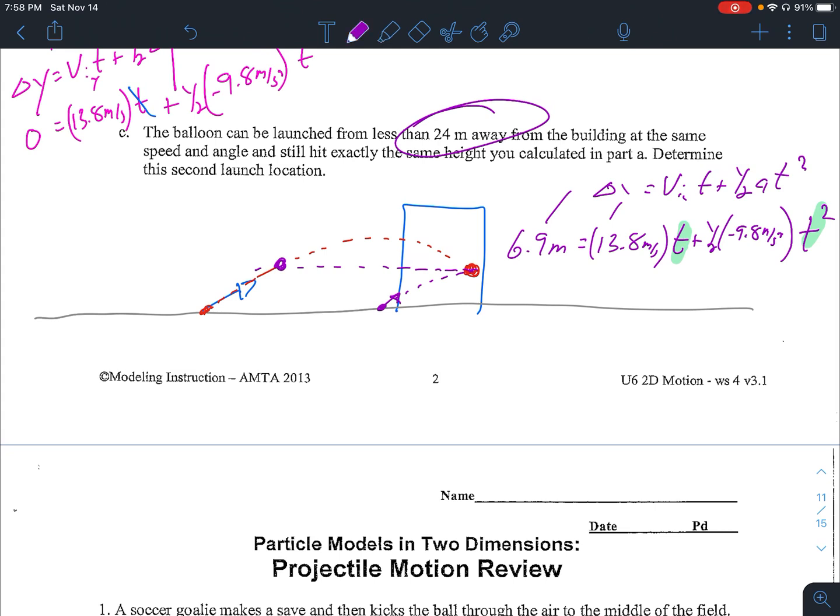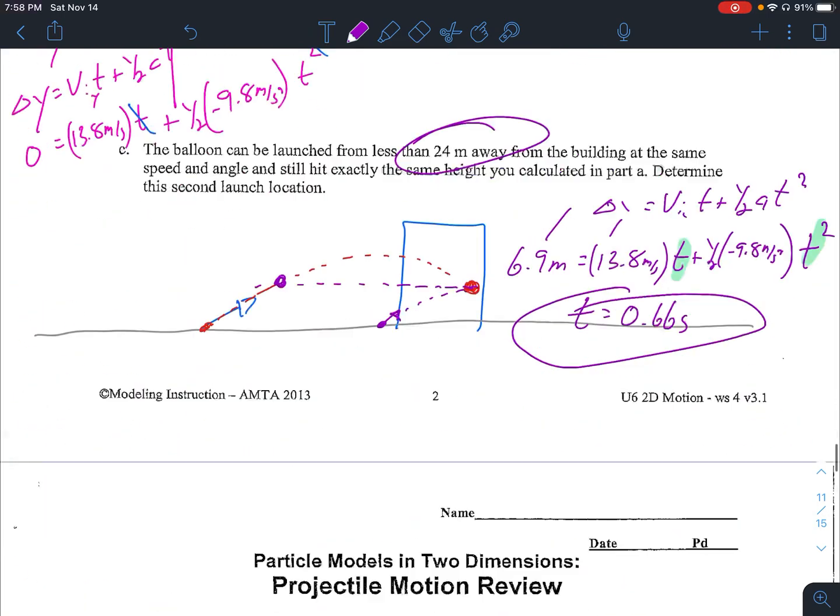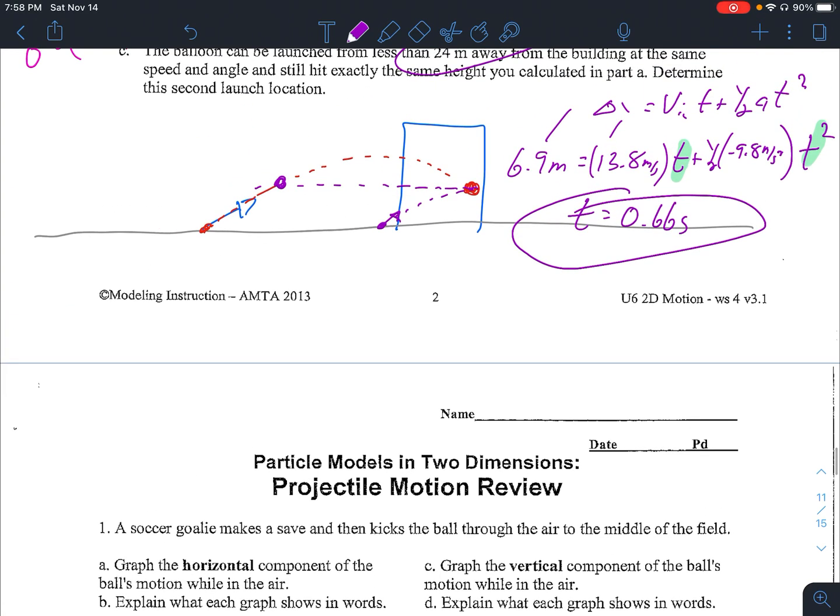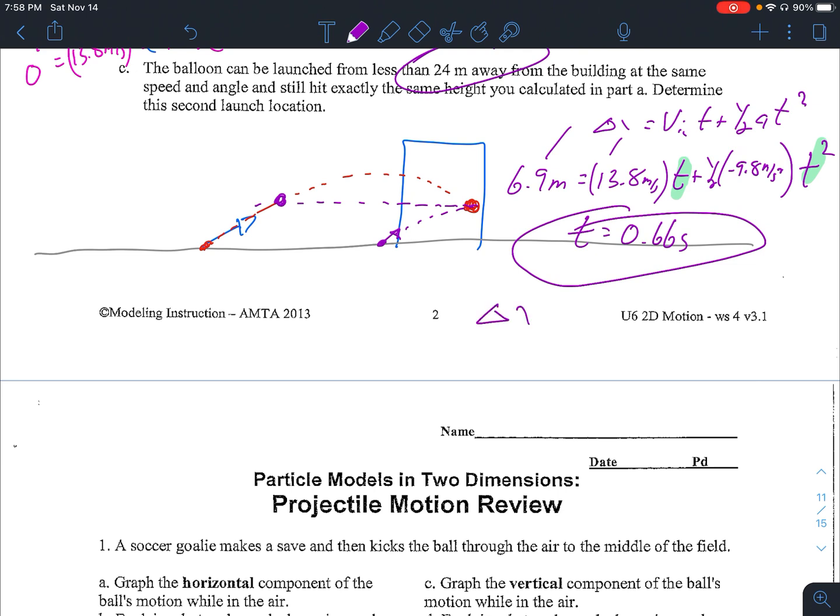So the time that we're looking for on the way up is going to be around 0.66 seconds because that's going to be on the way up. The longer time was the one from before, the 2.1 seconds. And then to figure out where we need to put our launcher, we just go back to our horizontal information.